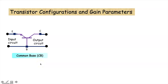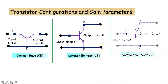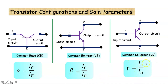Since BJT has three terminals, one terminal must be common to both input and output circuits. If the base is common to both input and output circuits, it is known as common base configuration. If the emitter is common to both input and output circuits, it is known as common emitter configuration. In the common base configuration, the input current is the emitter current and the output is the collector current. The current gain is represented as the ratio of output current to input current. Alpha denotes the current gain in CB configuration. Beta represents the current gain in common emitter configuration, and gamma represents the current gain in common collector configuration.